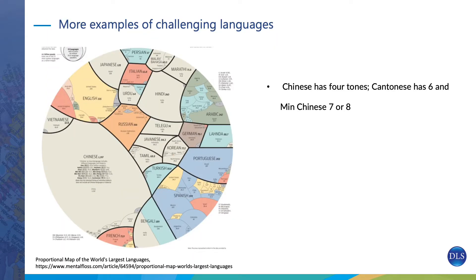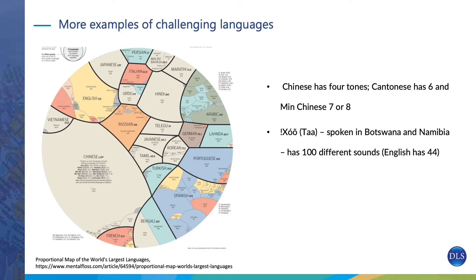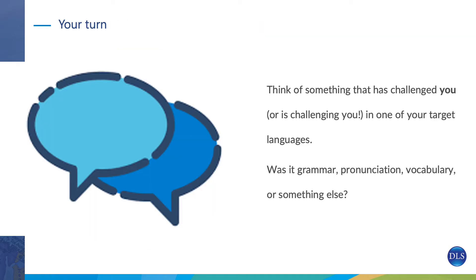A few more examples: Chinese is specifically challenging because of its tones — say a word with the wrong tone and you're saying a completely different word. The Khoisan language spoken in Botswana and Namibia has 100 different sounds, whereas English has only 44. Japanese has three different writing systems. Take a moment to think of something in your target language that has recently been a challenge — was it grammar, pronunciation, vocabulary, or something else?